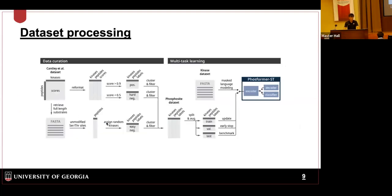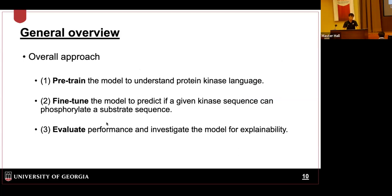To build this framework, we curated data differently compared to previous methods. We collected positive data from a recently published dataset. For the negative data, we tried different levels of data curation to make sure our model does not over-represent easy cases where the substrate has no evidence of phosphorylation, ensuring such cases are minimized in our final training dataset. Our approach is three steps: first, pre-train the model to understand the protein kinase language; then fine-tune it to predict whether a given kinase sequence can phosphorylate a substrate sequence; and finally, evaluate and investigate the model for its explainability.